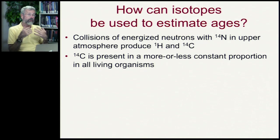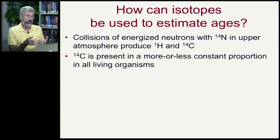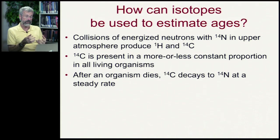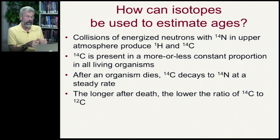In the air we breathe, carbon-14 is always around. Since it's being regenerated in the upper atmosphere, it's present in a more or less constant proportion in all living things. The carbon we breathe in ultimately becomes carbohydrates, becomes part of our food, becomes part of our bodies. But carbon-14 is a radioisotope — it decays. So after the organism dies, there's no more replenishment of carbon-14. What was available at death now decays back to nitrogen-14 at a steady rate. The longer after death, the lower the ratio of carbon-14 to carbon-12.